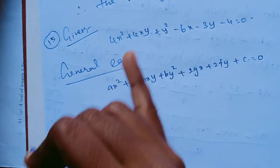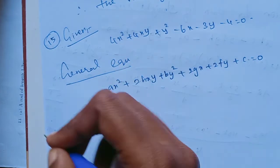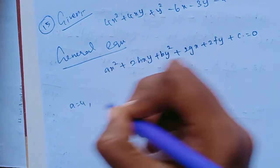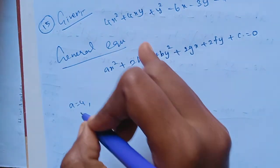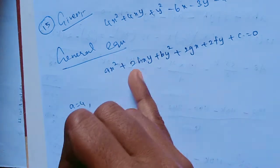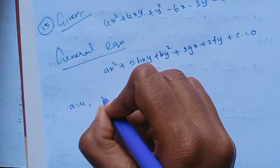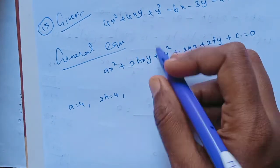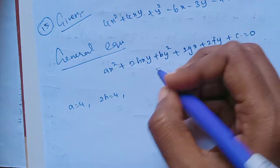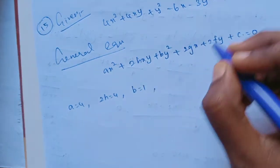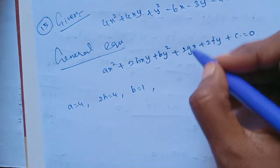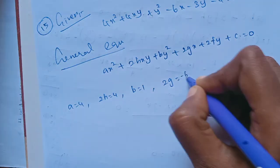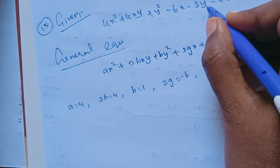Comparing the coefficients: x² gives A = 4. The xy term gives 2H = 4. The y² term gives B = 1. The x term gives 2G = -6.